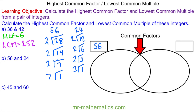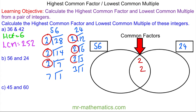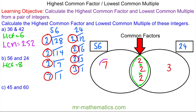In the Venn diagram, 56 is one circle and 24 is the other. We can see a 2 is common, another 2 is common, and again another 2 is common. Then we have the 7 in 56 and a 3 in 24. The highest common factor is where the two circles overlap, which is 2 times 2 times 2, so the highest common factor is 8, and the lowest common multiple is 7 times 8 times 3, which is 168.